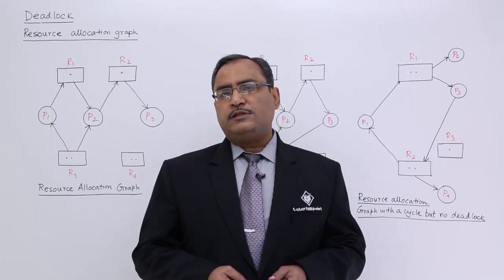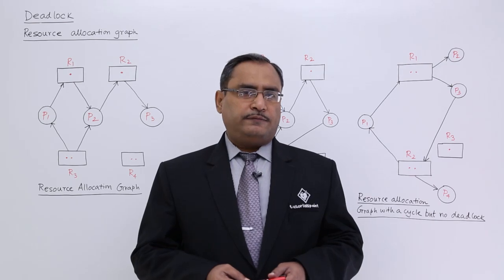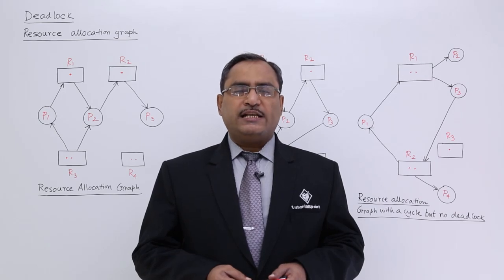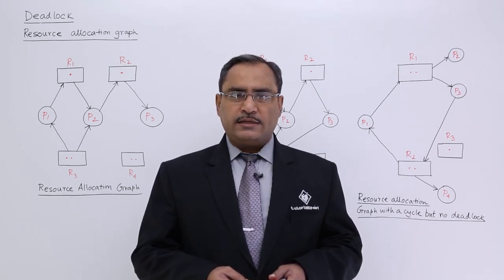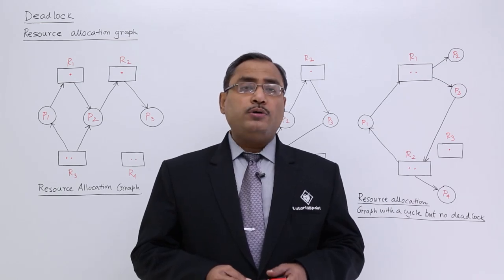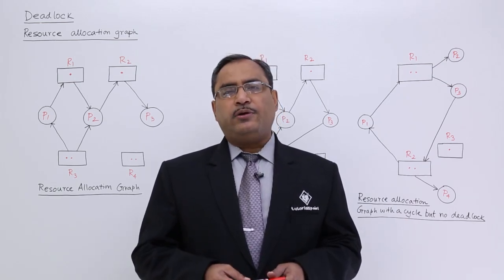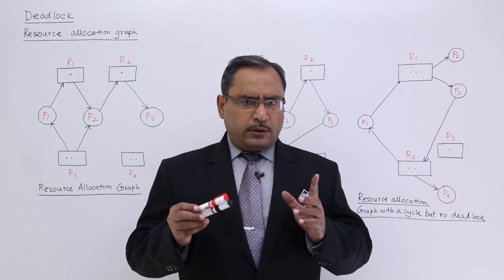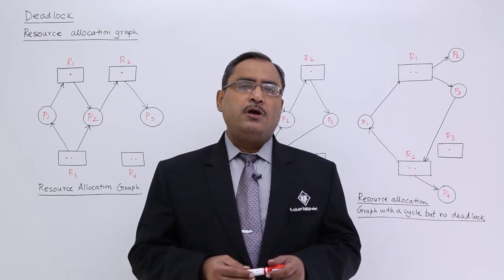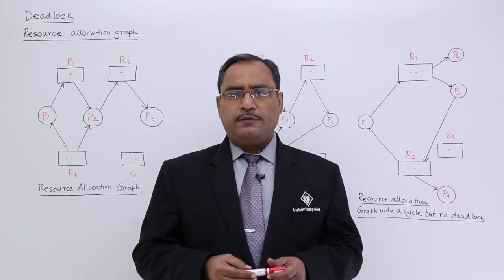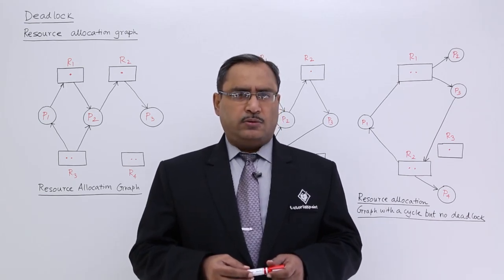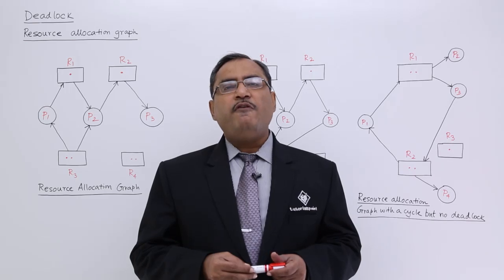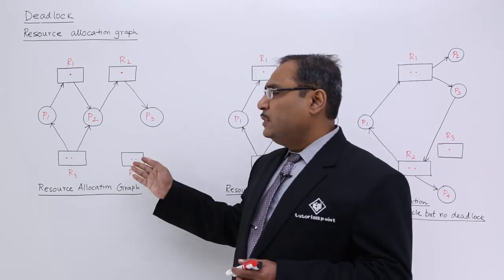Let us discuss resource allocation graph in this session. A resource allocation graph is a graphical representation to denote how the allocation has been made — allocation of a resource instance to a particular process, or how to depict that a process has placed a request to the operating system but the request has not been granted yet. A graphical representation can express the situation much better than plain text. This is a sample resource allocation graph.